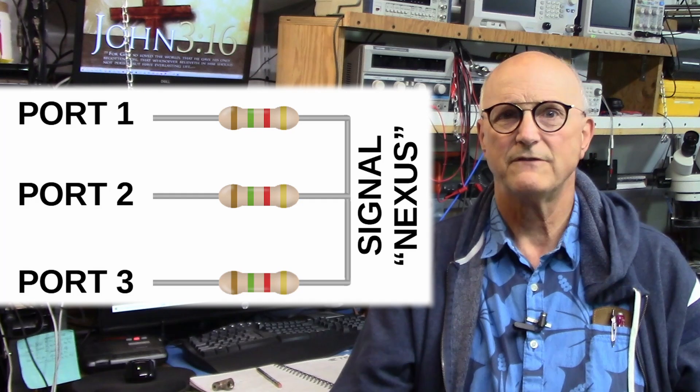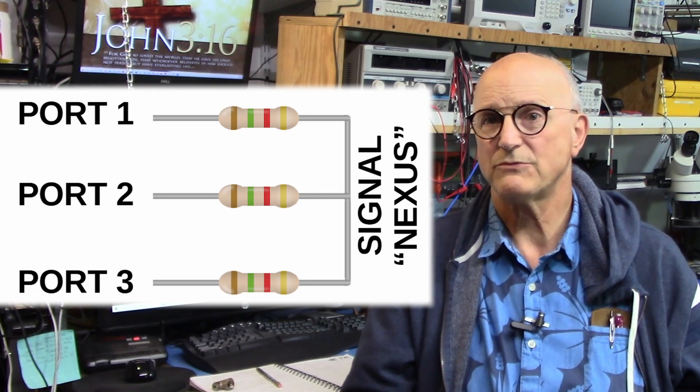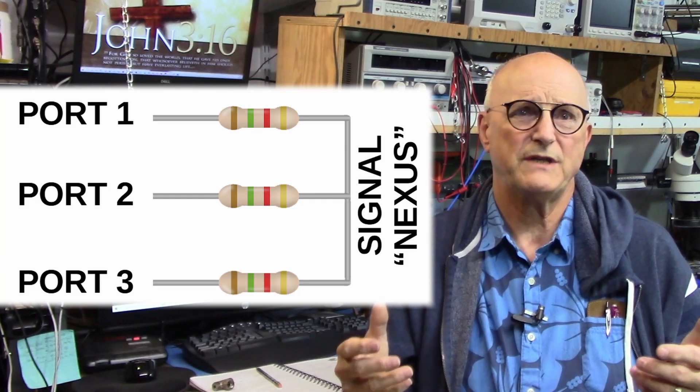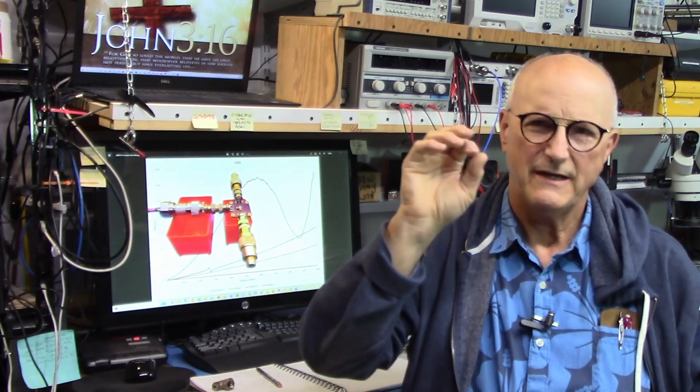The other end of these resistors are connected together as kind of a signal nexus, if you will. Analysis of this configuration can be accomplished with basic ohm's laws that pertains to voltage dividers. Now, I'm not going to go through all the analysis here, but here is the end result for your convenience.